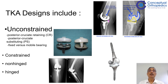In the cruciate retaining design, the femoral component has lugs which articulate with the tibial base plate. Whereas in the cruciate sacrificing or substituting design, the femoral component has a cam which articulates with a post on the tibial side. This involves a little more bone needing to be taken out in the intercondylar region of the femur for a cruciate substituting design.